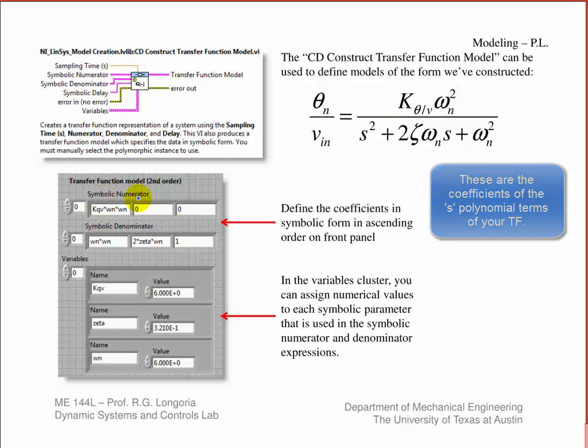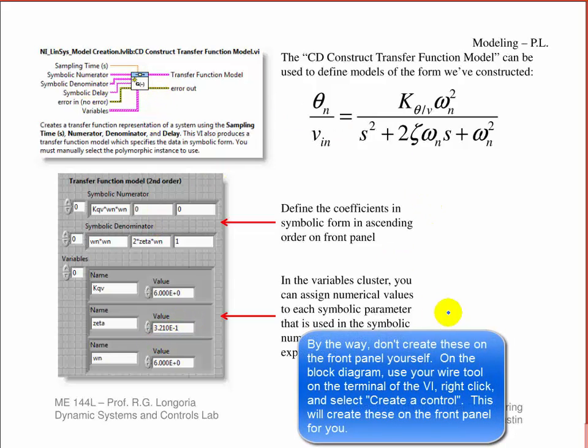Here's what the front panel's going to look like. The numerator only has the kqv, which is this term here. You go in ascending order, so this is the zeroth term, and then the first order and second order terms are zero in the numerator. In the denominator you have omega n squared. See how you can define these symbolically? And they have two zeta omega n. That's your first order, and then the second order polynomial has just unity. You can have this other cluster that you can create on your block diagram where you can define the parameters that you use to define these terms and the associated numerical values. It's a really nice way of building that transfer function model.